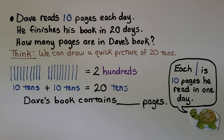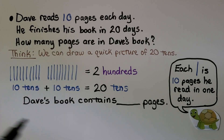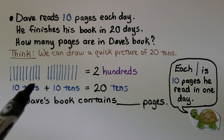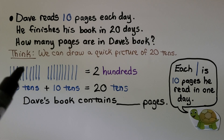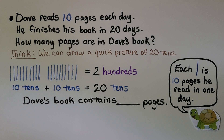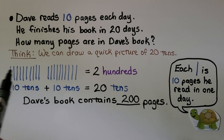Dave reads 10 pages each day. He finishes his book in 20 days. How many pages are in Dave's book? We can draw a quick picture of 20 tens — 20 days, 10 pages each day. We make a line for the 10 pages he read each day and draw 20 lines. That's 20 tens. 10 tens is 100, so we have 100, 200 — that's two hundreds. If you said 200, you're right. Each line is 10 pages read in one day, and we have 20 lines for the 20 days. That makes 100, 200. Dave's book contains 200 pages.